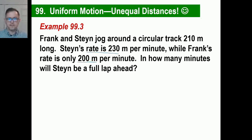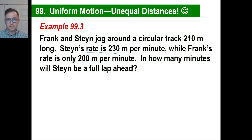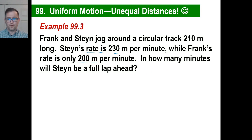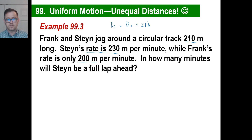They jog around the track and there's no time given anywhere. So you have to assume they both started jogging at the same time — their times are going to be the same. The distance equation we want is: at what point is Stein a full lap ahead? A full lap ahead is 210. So we want: distance of Stein equals distance of Frank plus 210.